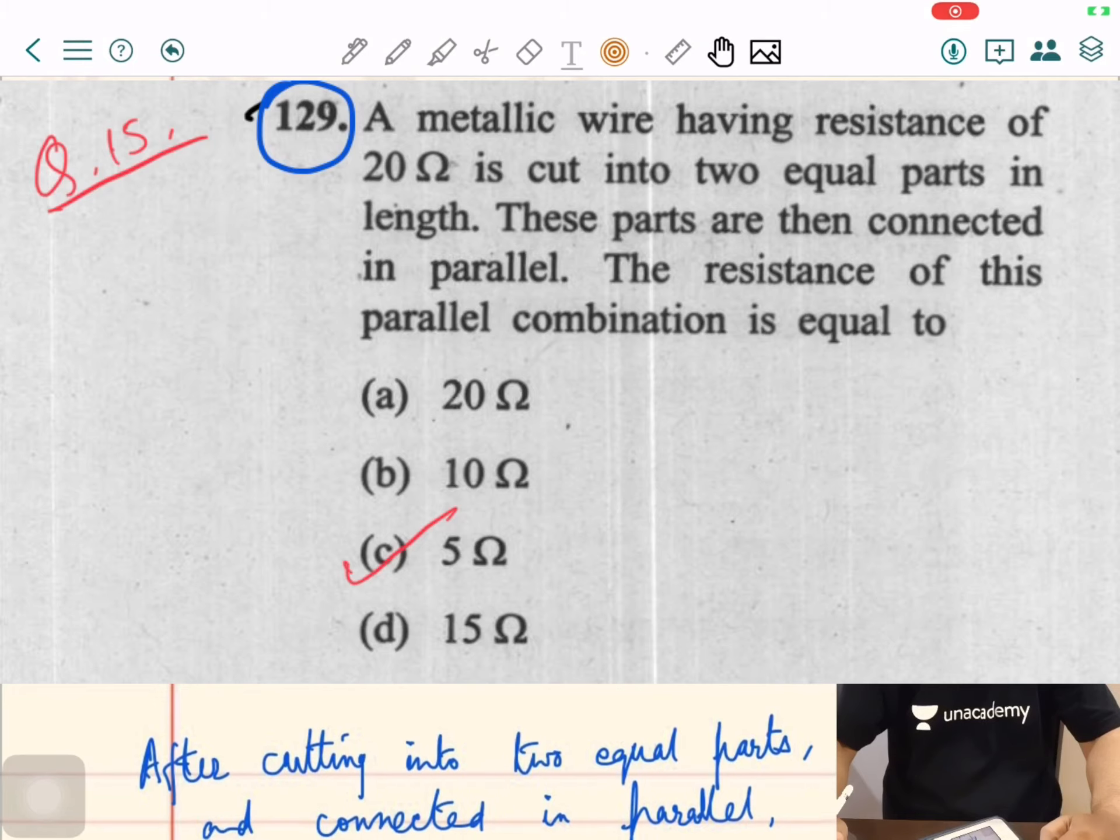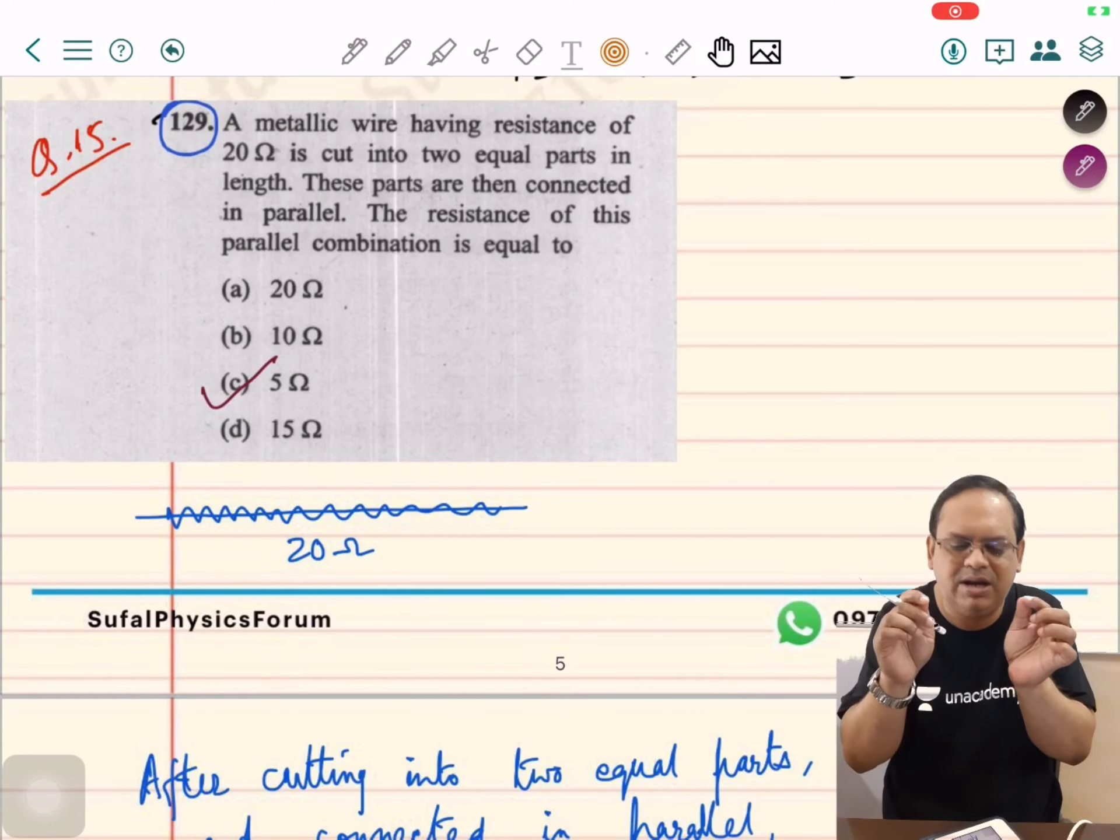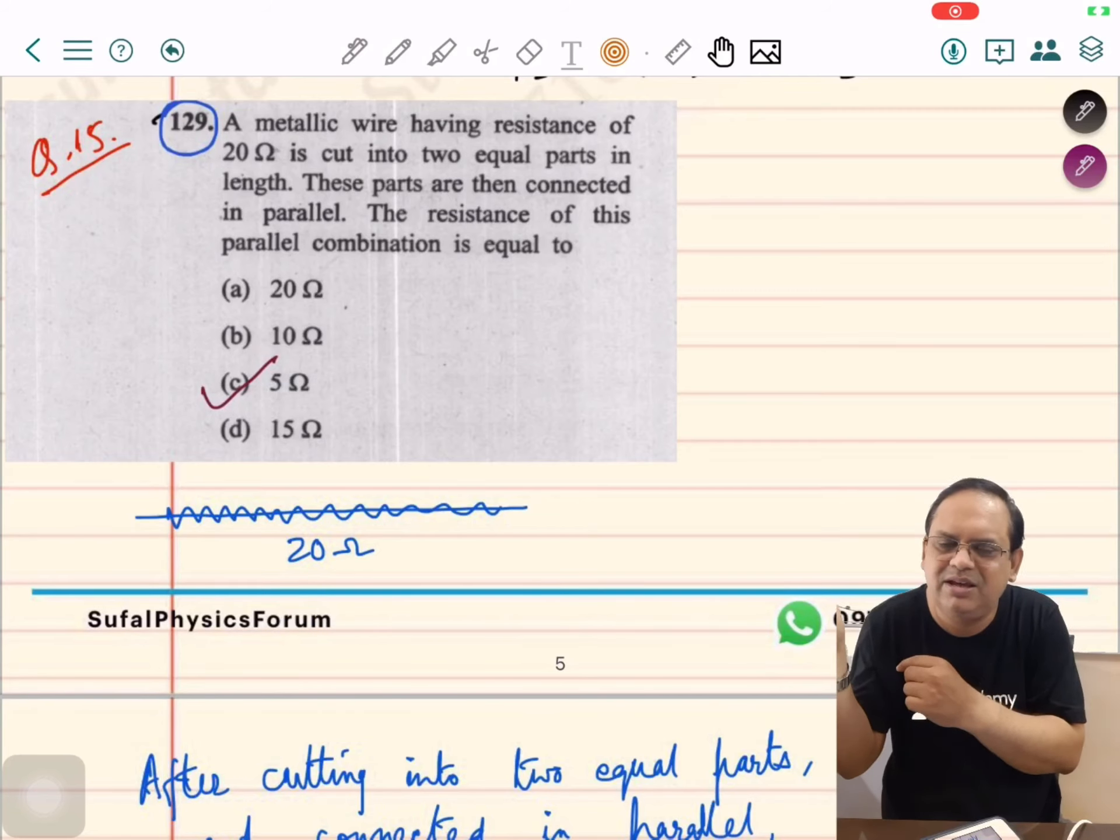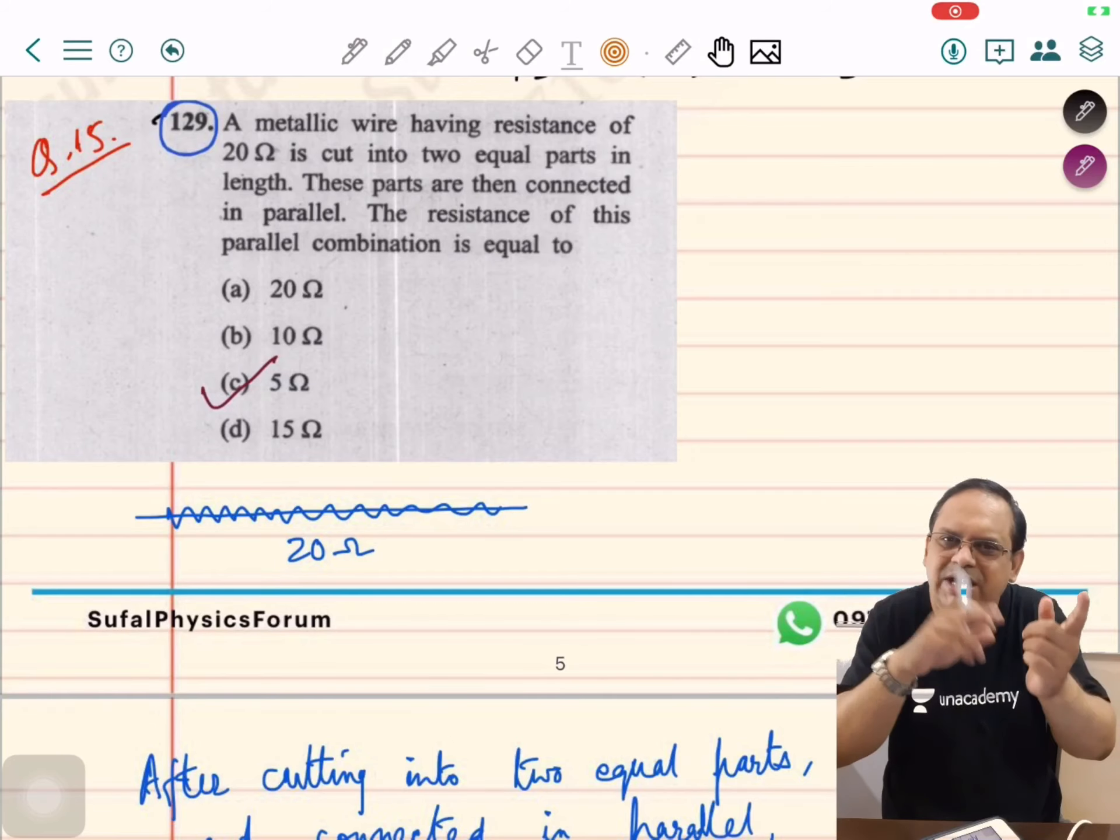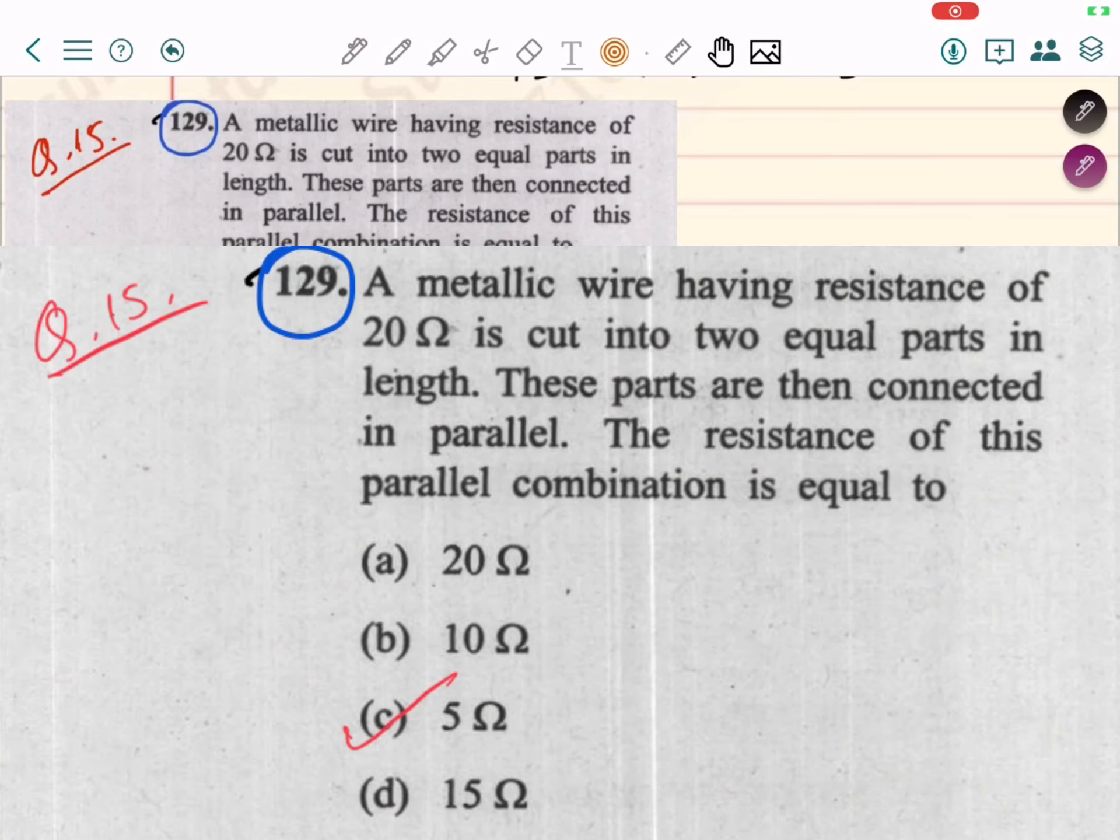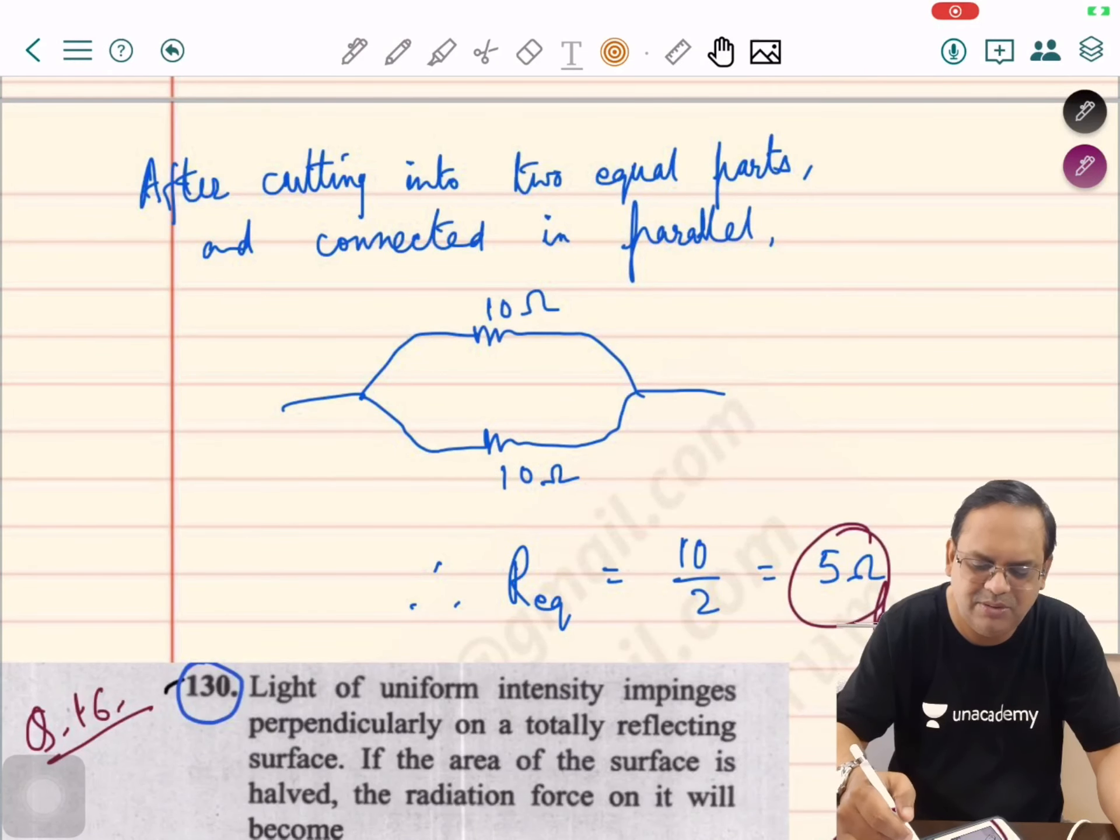Question number 15. A metallic wire having a resistance of 20 ohms. If you cut into two equal parts, 10 ohms here and 10 ohms here. These parts are then connected in parallel. If you connect 10 ohms in parallel, then it becomes half of the parallel combination of identical resistances. Hence, 5 ohms will be the required answer.